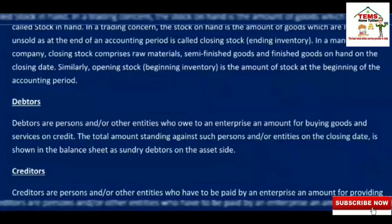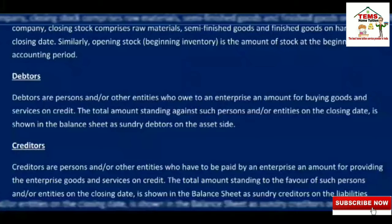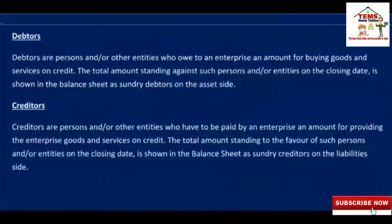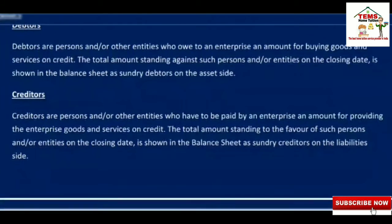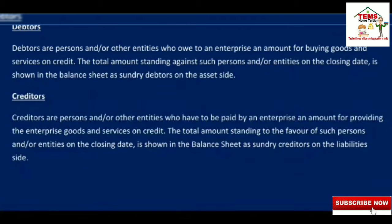Next term is Debtors. Debtors are the persons or other entities or parties who buy goods on credit. The total amount outstanding against such persons or entities on the closing date is shown on the asset side of the balance sheet. Next and last term is Creditors. Creditors are persons or entities who have to be paid by an enterprise for providing goods and services on credit. The total amount standing in their favor on the closing date is shown on the liability side of the balance sheet as sundry creditors.